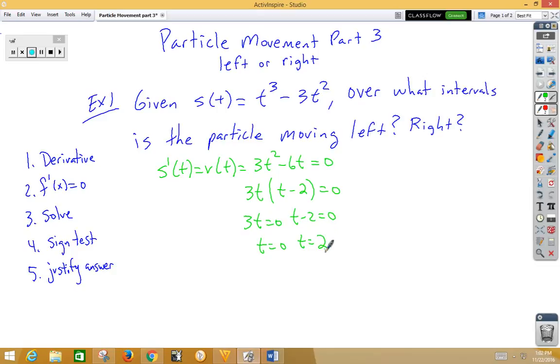Now we need to do what's called a sign test. So we create a little number line and we put our zero and our two. Now it's very important to know with particle movement that time cannot be negative. Pete particle cannot live in the past, can only live in the present or the future. So ignore all negative time. In our sign test, we do not have to test any time values to the left of zero. So we can ignore that interval.